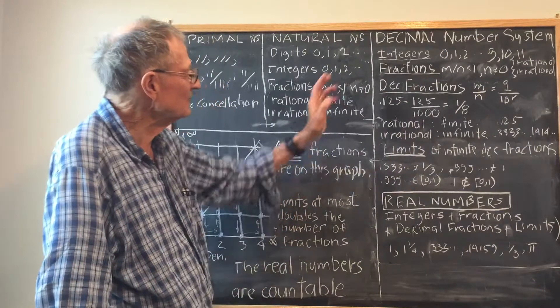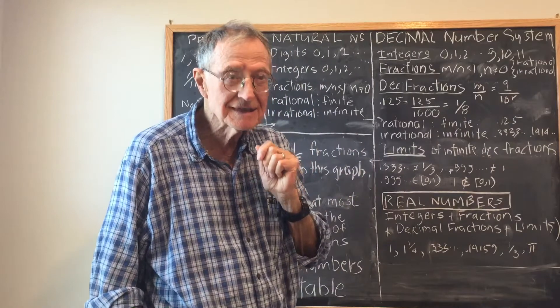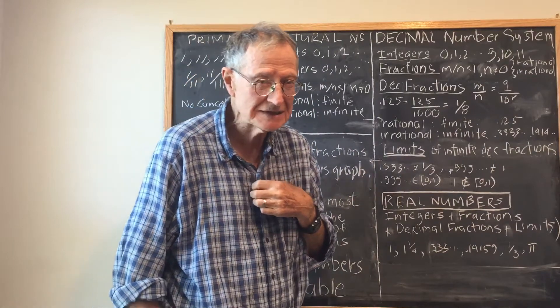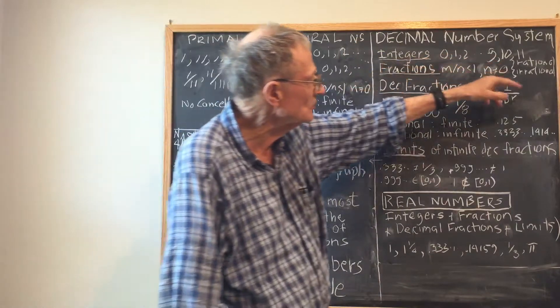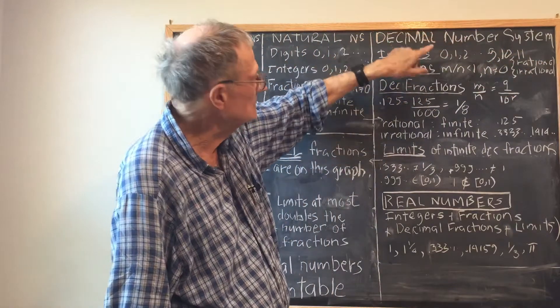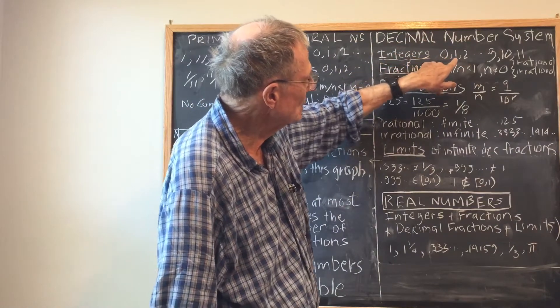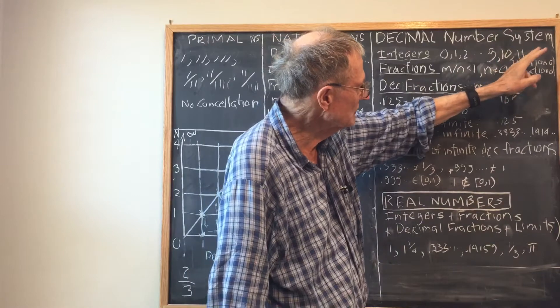Then we have the common number system used today, which is the decimal number system. The decimal number system has integers 0, 1, 2, 9, 10, and the digits based on these numbers are 0, 1, 2, and 9. Then you go to 10 with a base of 10, 11, 12, etc.